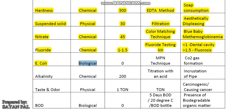E. coli, that is coliform bacteria, is a biological water quality parameter. It is measured by MPN technique and its amount should be 0 — the presence of E. coli indicates the presence of pathogenic bacteria. So its amount should be 0, meaning there are no pathogenic bacteria present and the water is safe for drinking. In the test tube, if coliform bacteria is present, it will generate carbon dioxide gas. Generation of CO₂ gas indicates the presence of coliform bacteria, which indicates pathogenic bacteria — meaning the water is not safe for drinking.